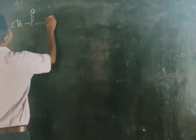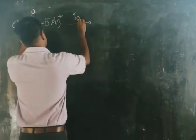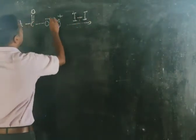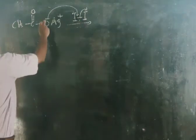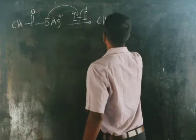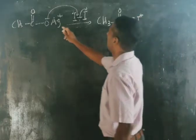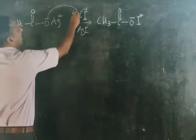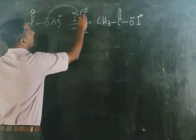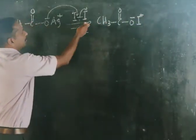Now let us go through the mechanism of the Woodward reaction. We start with silver acetate (CH₃COO⁻ Ag⁺) reacting with iodine (I₂). The oxygen of the acetate acts as a nucleophile, abstracting I⁺ from I₂. What we get is CH₃COO⁻–I⁺, and AgI is eliminated. This is the first step.